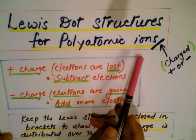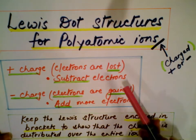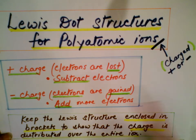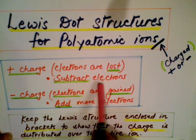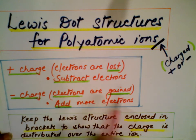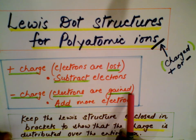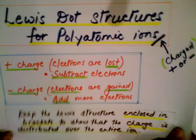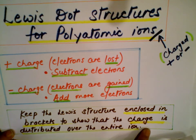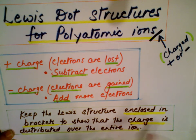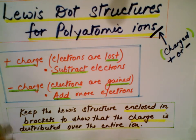We're drawing Lewis dot structures for polyatomic ions. You can tell they're ions because of the positive or negative charge. A positive charge means electrons are lost, so you subtract the appropriate number of electrons. A negative charge means electrons are gained, so you add the appropriate number. Also remember to keep Lewis dot structures in brackets, because that shows the charge is distributed over the entire ion, not just on one atom.